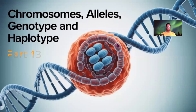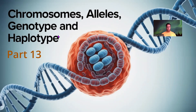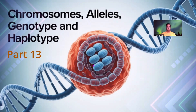Hello everyone, welcome to part 13 of the biology crash course series. Today we are going to talk about chromosomes, alleles, genotype, and haplotype. I think this is one of the most confusing topics in the world of bioinformatics, so let's dive in.